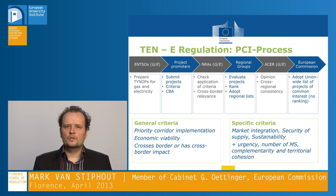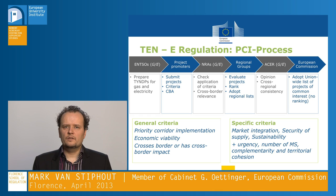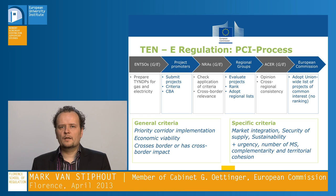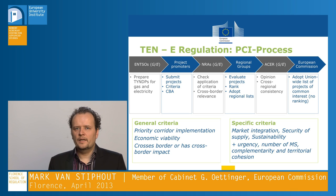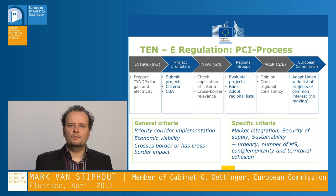First, the TEN-E regulation sets the principle for identifying projects that have a European interest. The process starts with the 10-year network development plan of the TSOs. It goes to stakeholders, project developers, and regulators who have to check it, and it ends with the European Commission, which has to approve the final list of projects of common interest. In between, there are regional groups where different projects are discussed and ranked.